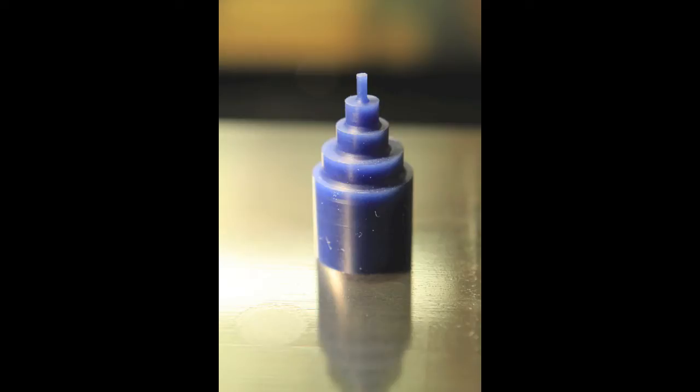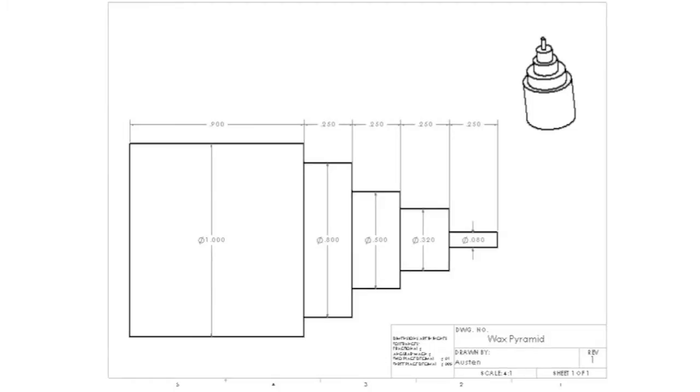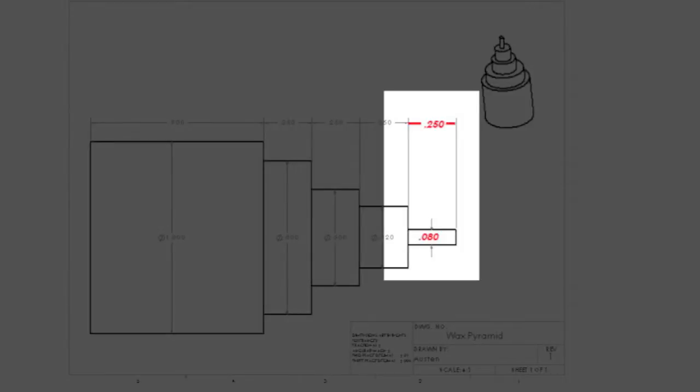Today you'll be learning how to make this pyramid out of wax. It's a relatively simple process in the lathe, so let's get started. Here's the drawing you'll be using. As you can see, there are four tiers that are a quarter inch tall, and a one inch base is nine hundred thousandths tall. First we'll be focusing on the top tier. It'll be eighty thousandths in diameter and two hundred and fifty in height.